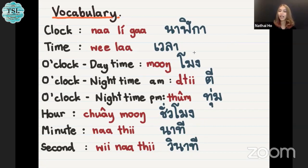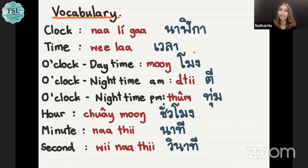Next one, 'time' in Thai we say vela, vela. O'clock daytime, we say mong, mong.